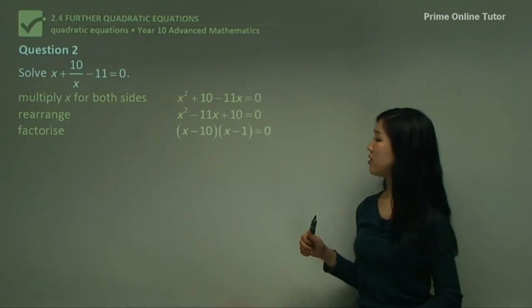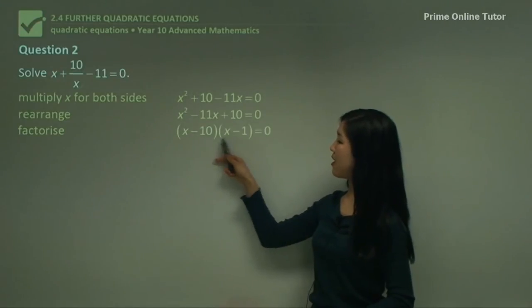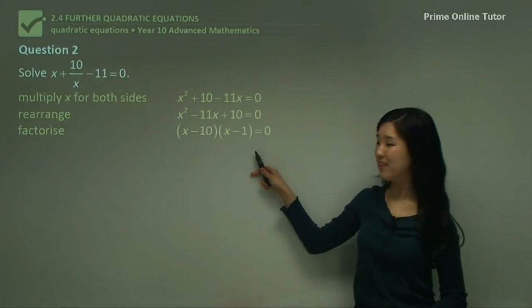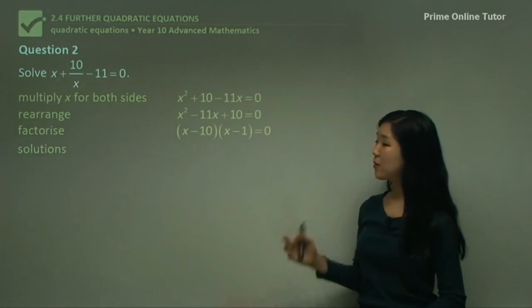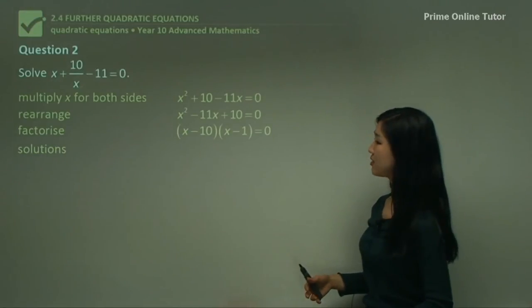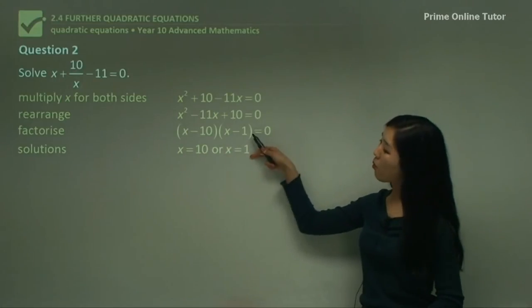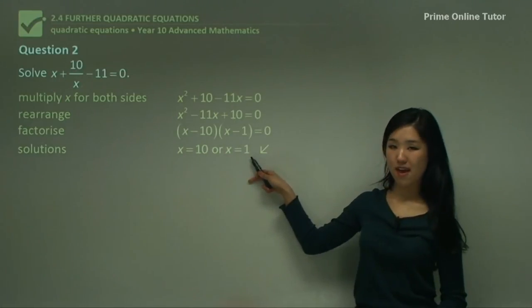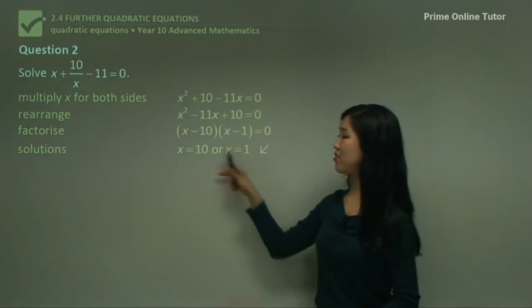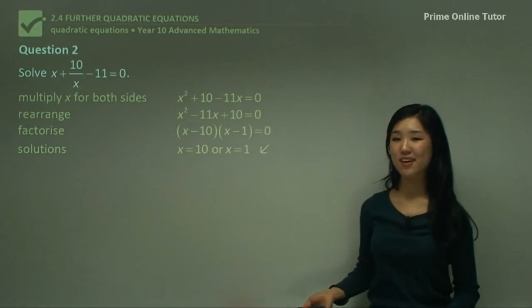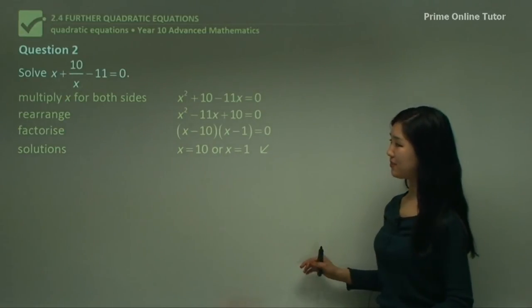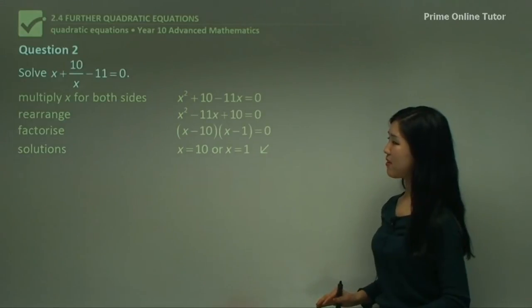Now factorize it. I think 10 and 1 you could use. So (x - 10)(x - 1). That's equal to 0. So what are the solutions? x equals to positive 10 from that one and x equals to positive 1 from there. Those two solutions are our final solutions. So simple.